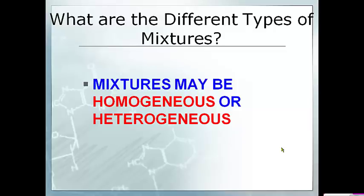With homogeneous mixtures and dissolving, you have some things that are soluble and insoluble. Soluble means it's capable of dissolving. Insoluble means it's not capable of dissolving. And when you hit the saturation point, that's when you've dissolved as much of the solute in the solvent as you possibly can, and no more can be dissolved.